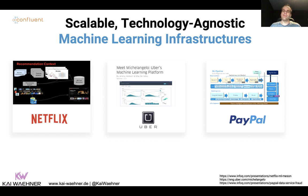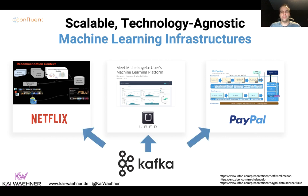From a finance perspective, PayPal is a great example — they've done a lot regarding fraud detection and built a huge framework for it, which has to run at scale in real time for millions of payments per second. Interestingly, all these examples from different industries use Apache Kafka under the hood, because Kafka is built for highly scalable infrastructures and real-time processing.